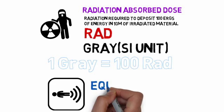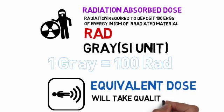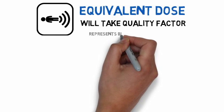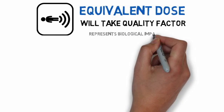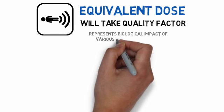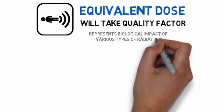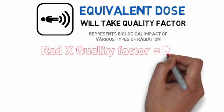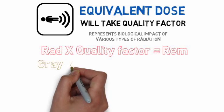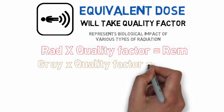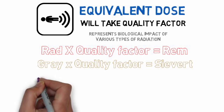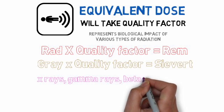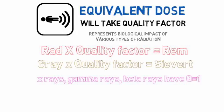Equivalent dose takes the quality factor into consideration. It represents the biological impact of various types of radiation. Rad multiplied by the quality factor equals rem; gray multiplied by the quality factor equals sievert. X-rays, gamma rays, and beta rays have a quality factor equal to 1.